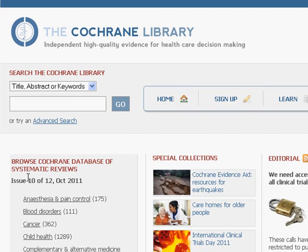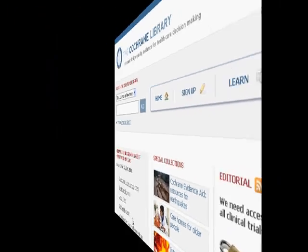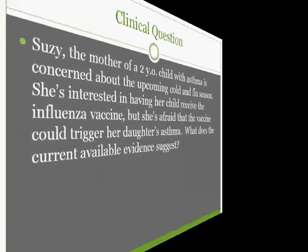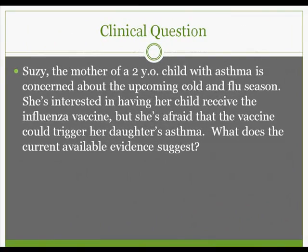For this demonstration, we'll be examining this clinical question. Susie, the mother of a two-year-old child with asthma, is concerned about the upcoming cold and flu season. She's interested in having her child receive the influenza vaccine, but she's afraid that the vaccine could trigger her daughter's asthma. What does the current available evidence suggest?